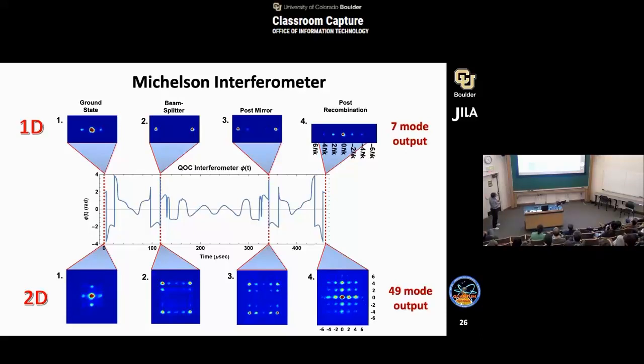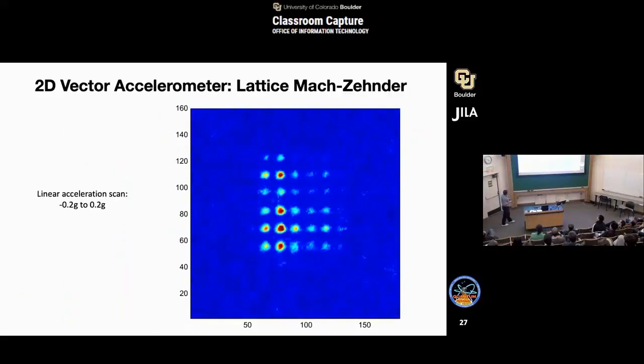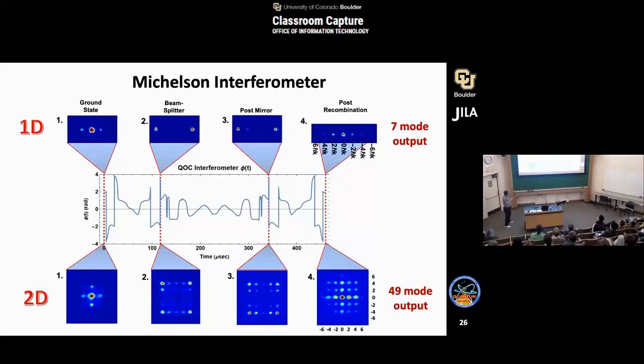We can do this in 1D, but now let's show you some data from 2D. This is the beam splitter, propagator, mirror, propagator, beam splitter thing again. Not only can we do this by moving the lattice in the x direction, but we can also do it in the z direction and we can do it at once. What does that mean? If you apply this in two dimensions at once, the condensate is going to split in both the x and z direction. So now, instead of the atoms going along two paths, they're going to go along four paths. They're going to be split in both dimensions. They're going to propagate out.